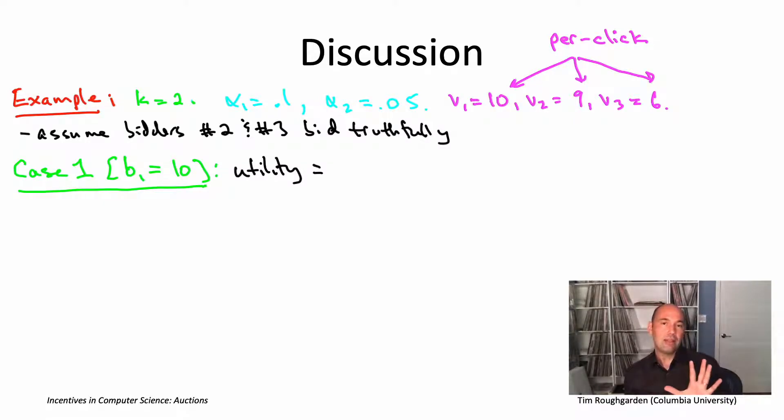Remember that the advertisers only care about clicks, and they're also only going to get charged per click. If that impression is not clicked on, which is 90% of the time, then the utility is zero because nothing gained, nothing lost. On the other hand, in the 10% of the time that this advertiser does have its link clicked on, it's going to get a value of 10 for that click because that's its valuation.